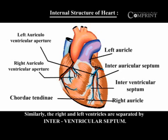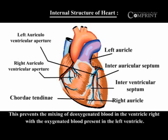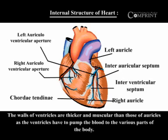Similarly, the right and left ventricles are separated by the interventricular septum. This prevents the mixing of deoxygenated blood in the right ventricle with the oxygenated blood present in the left ventricle.